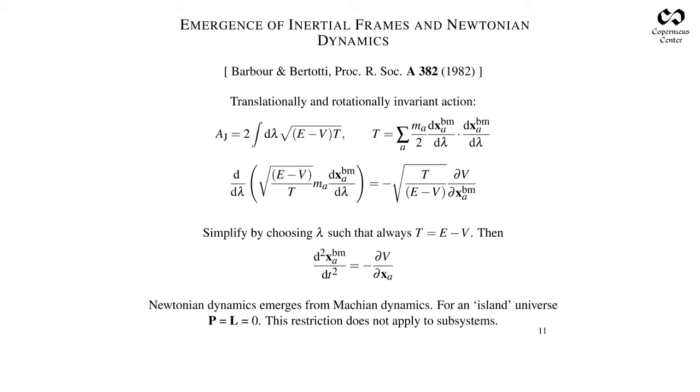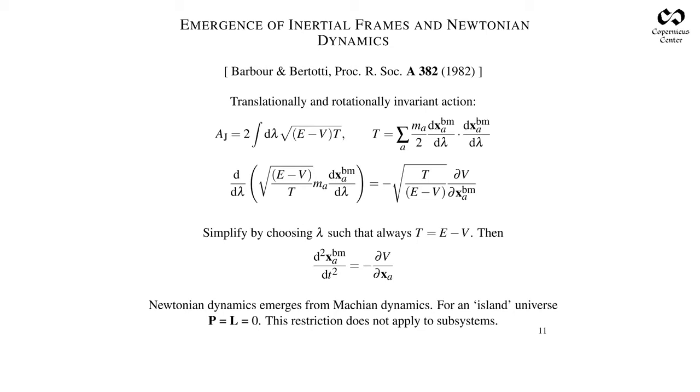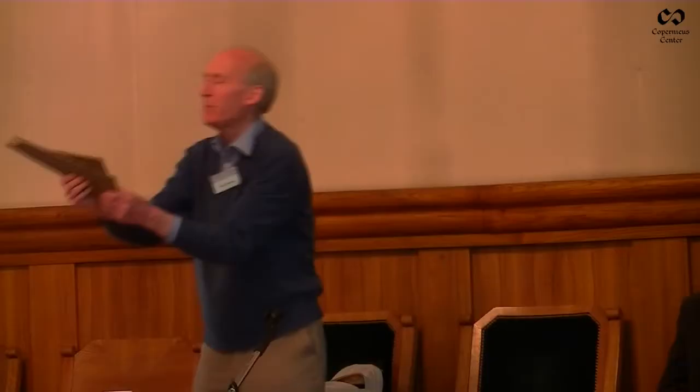That is fixed as a universal constant of nature—it's just like the cosmological constant in general relativity. V is a quantity defined on configuration space or shape space. You can always choose lambda to make T have an arbitrary value, and then Newton's second law emerges. Time has emerged—it wasn't put in the initial kinematics. And secondly, I get the best-matched positions. When I bring the triangles into the best-matched position, effectively I'm bringing the centers of mass to coincidence and reducing the net rotation to zero.